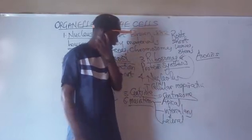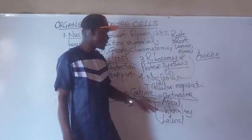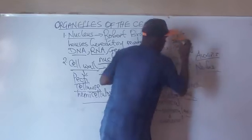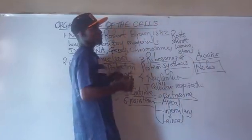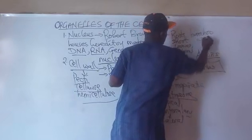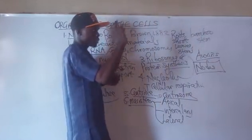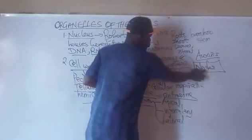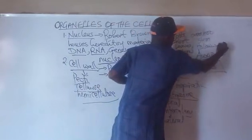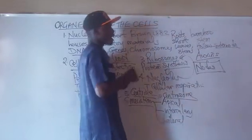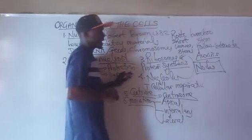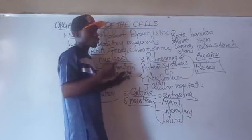The next type is intercalary meristem. 'Inter' means between. Intercalary meristem is found in the nodes of plants. You know the bamboo stem — it has a strong region where branches emanate, called the node, and a hollow region called the internode. Since this meristem is found in the nodes of plants, it triggers the growth of branches.